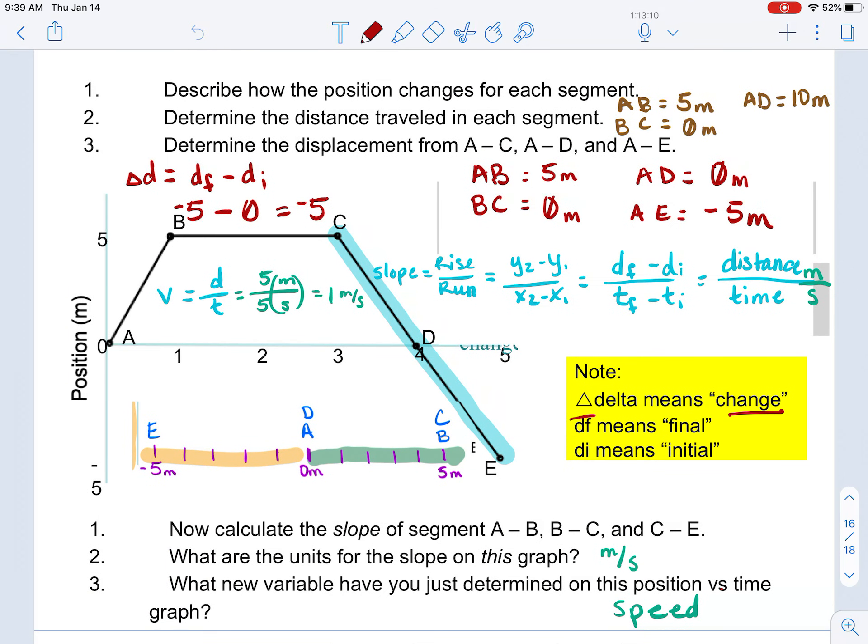All right. Now, here I have some information. I know there's lots on the screen. Let's just focus on what's written in brown for just a moment. If we are talking about the distance traveled, and I did three different segments here from point A to point B, that's five meters. B to C is zero meters. A to D is 10 meters. Here's what we're doing.